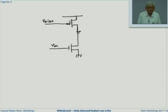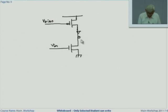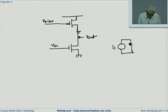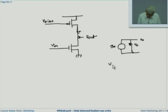Now, because this is the current source, the total amount of change in current here. So, suppose this is V out, then the equivalent of this transistor can be taken to be like this. And because this is the current source, its impedance is infinite. As a result, my output voltage will be Vi times gm times R0, and therefore my gain will be gm times R0.